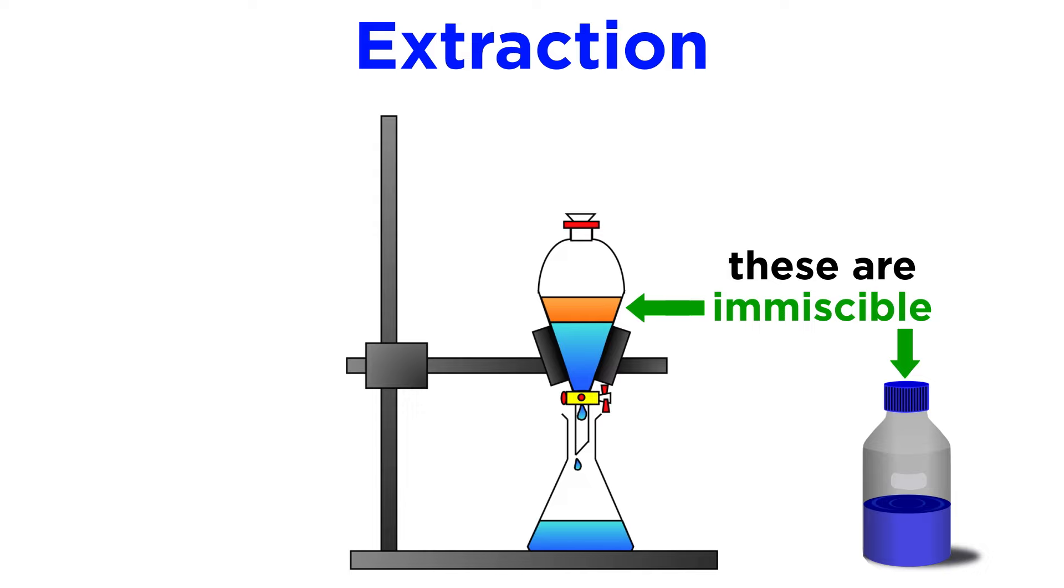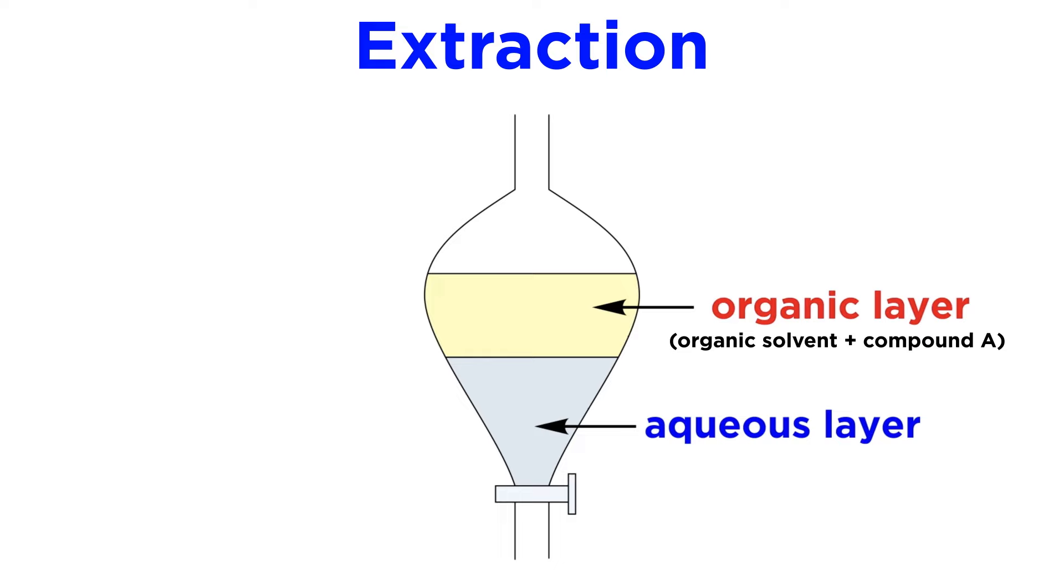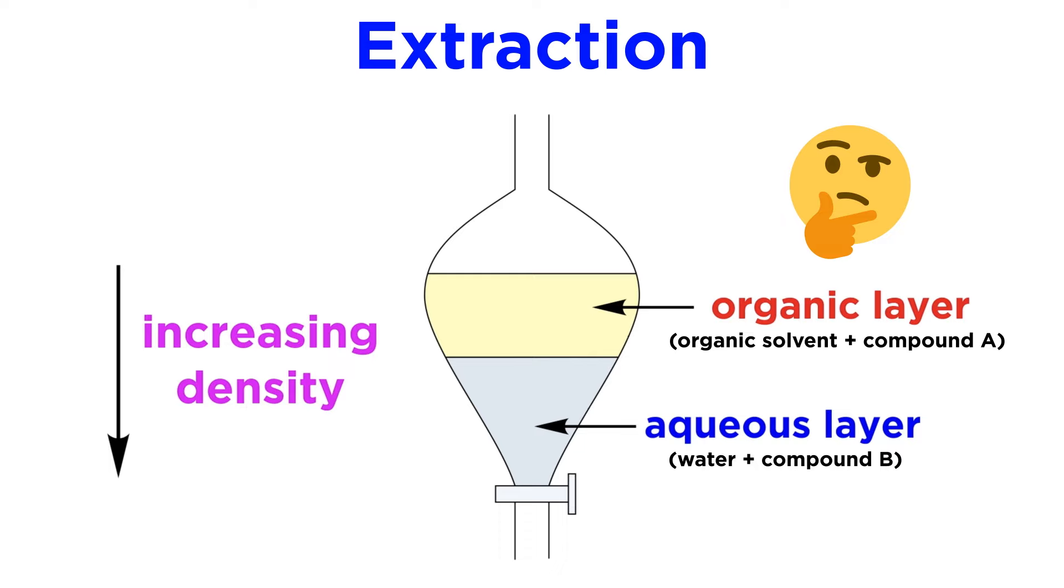To do this, we'll need a separatory funnel. This is a tool that is used to separate two immiscible liquids of different densities. Once again, in most cases, the two liquids will be an organic solvent, plus whatever compounds are dissolved in it, and then water, plus whatever compounds are dissolved in it. It is usually the case that the aqueous layer has a greater density than the organic layer, so it goes to the bottom while the organic solvent stays on top, as gravity will pull the denser layer down with greater force. However, some organic solvents are more dense than water and will thus occupy the bottom layer, so it is important to consult a table of densities to be sure as to which layer is which.